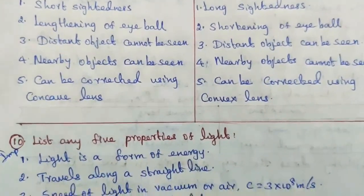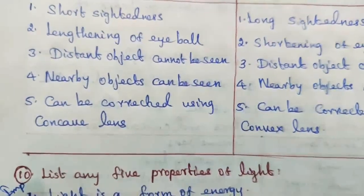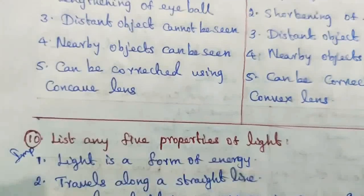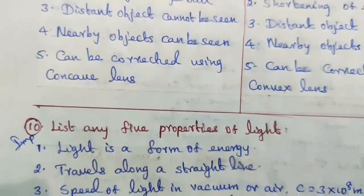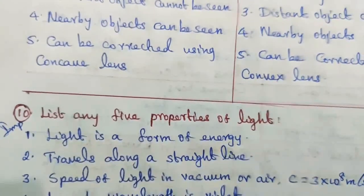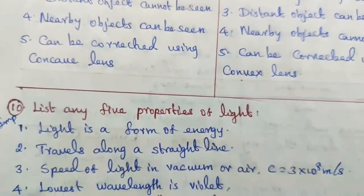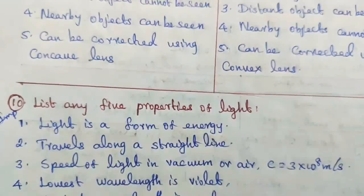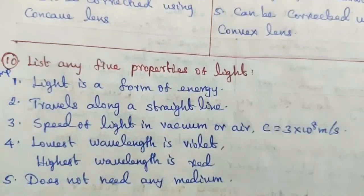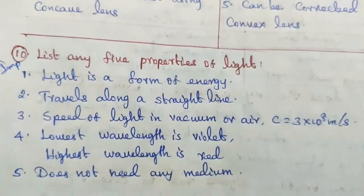Question number ten, important detailed question: list any five properties of light. One — light is a form of energy. Two — it travels along a straight line. Three — speed of light in vacuum is c = 3 × 10⁸ m/s. Four — lowest wavelength is violet, highest wavelength is red. Five — it does not need any material medium for its propagation.